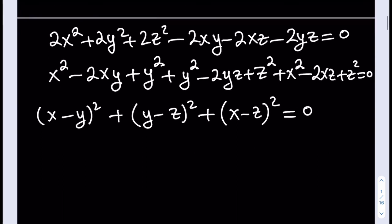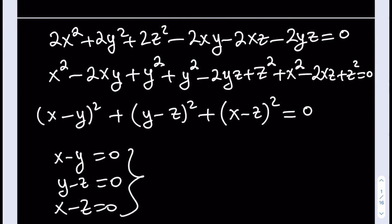So from here, we get the awesome result. The conclusion is x minus y is equal to 0, y minus z is equal to 0, and x minus z is equal to 0. Meaning that if you put it all together, this means x equals y equals z.